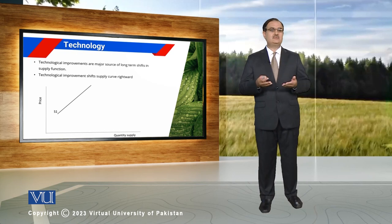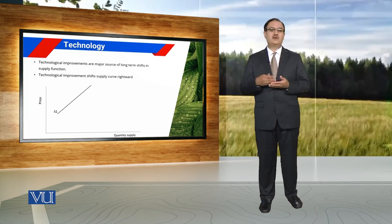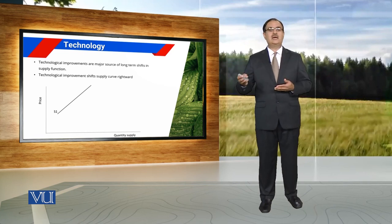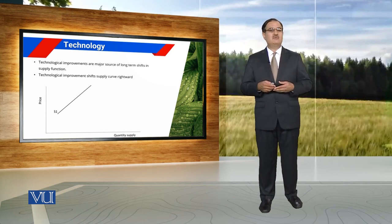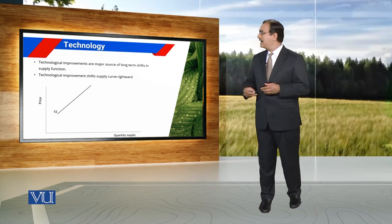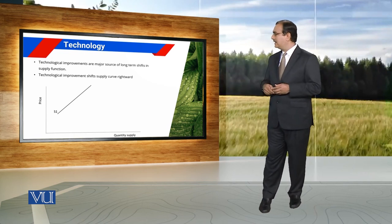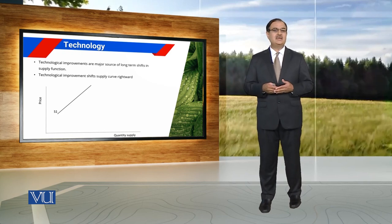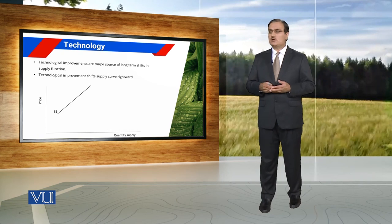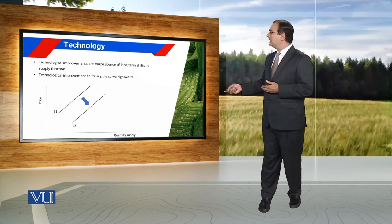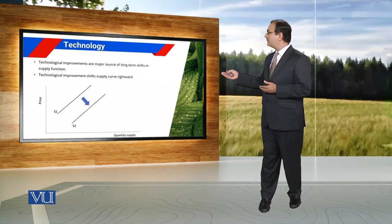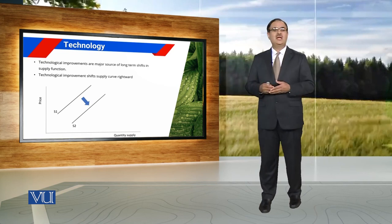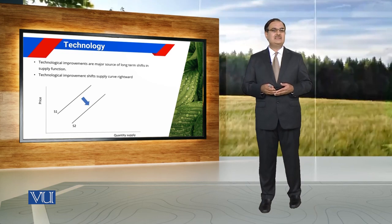To indicate the impact of technological improvement on supply shift, we take the horizontal axis as quantity supplied and the vertical axis as price. This S1 curve indicates a positive association between quantity supplied and price. Because of technological improvement, the supply curve shifts from S1 to S2, indicating an increase in supply.